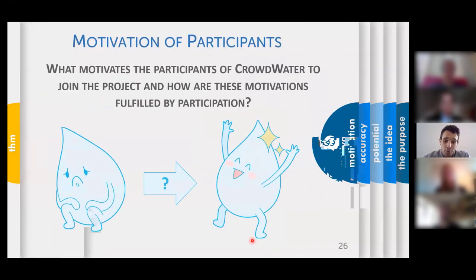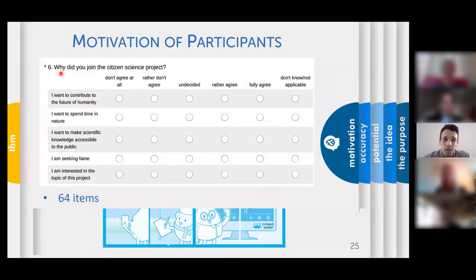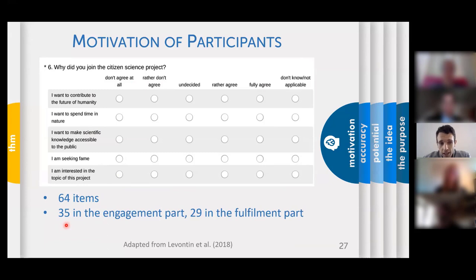You might also ask yourself: why would people actually contribute to such a project? That's exactly what I asked myself as well, so I sent out a questionnaire to our participants where they had to give their agreement to 64 statements — for example: 'I want to contribute to the future of humanity,' 'I want to spend more time in nature,' 'I'm seeking fame,' or 'I'm just interested in the topic.' They responded on a Likert scale from 'don't agree at all' to 'fully agree.' The questionnaire had two parts: why did you initially join, and what did participation actually give you?